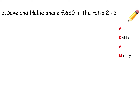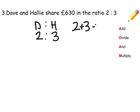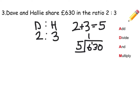We're going to share slightly bigger numbers this time — don't let it put you off, it's the same method. Dave and Hallie are sharing £630 in the ratio 2 to 3. So we add: 2 plus 3 equals 5. Then we divide 630 by 5. 5 into 6 goes 1 remainder 1, 5 into 13 is 2 remainder 3, and 5 into 30 is 6. So each share is 126 this time.